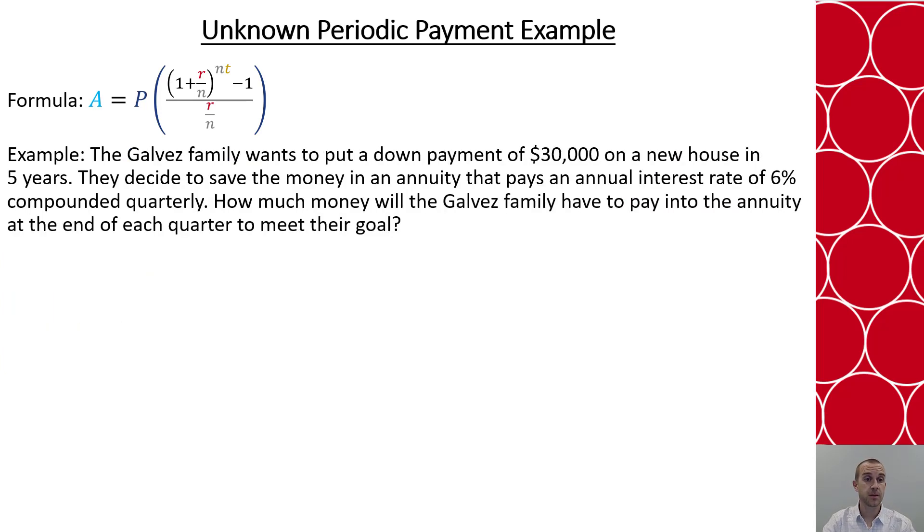Let's look at another example. The Galvez family wants to put a down payment of $30,000 on a new house in five years. They decide to save money in an annuity that pays an annual interest rate of 6% compounded quarterly. How much money will the Galvez family have to pay into the annuity at the end of each quarter to meet this goal?